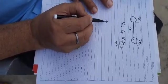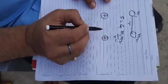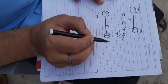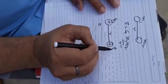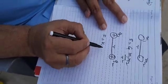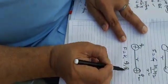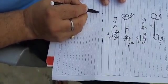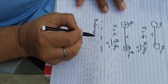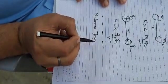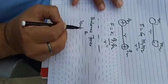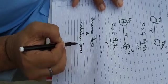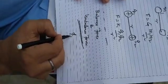Electrostatic force: if there is a positive charge and another positive charge separated by distance r, there is a repulsive force. With charge q1 and charge q2, F = k·q1·q2 / r². We will discuss these later. In the next class we are going to discuss balanced force and unbalanced force — these two are very important. Thank you.